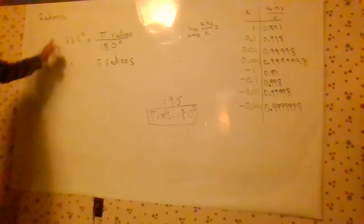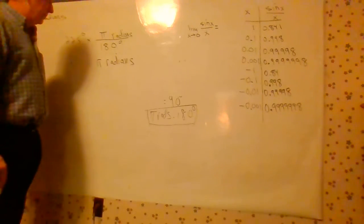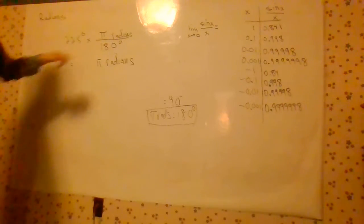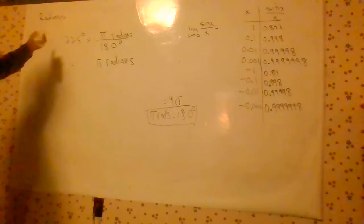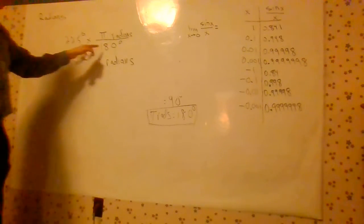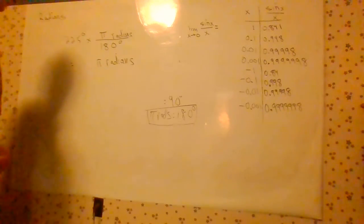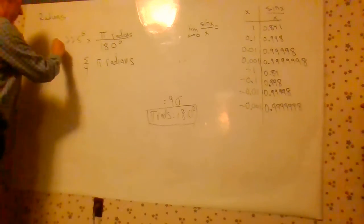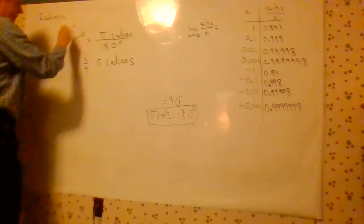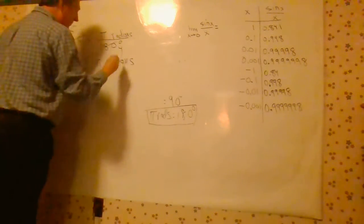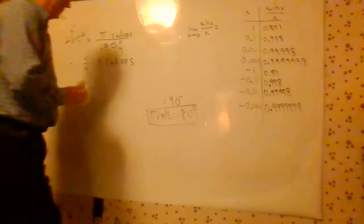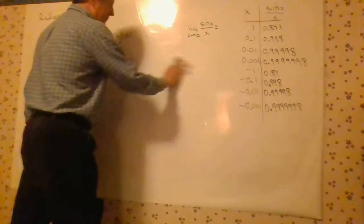And we can simplify 225 over 180. You can have a spiffy calculator if you want, but 45 divides into each of these. 45 goes into that 5 times, 45 goes into that 4 times. So that's really 5 over 4 pi. Use a calculator if you're not that familiar with this sort of reduction.